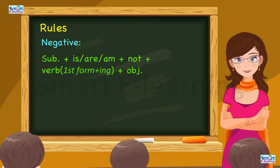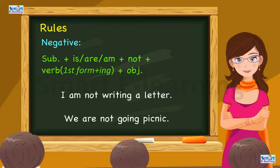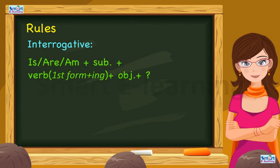Negative: subject plus is, are, am plus not plus verb first form plus ing plus object. I am not writing a letter. We are not going picnic.